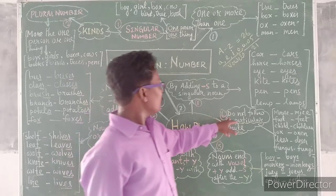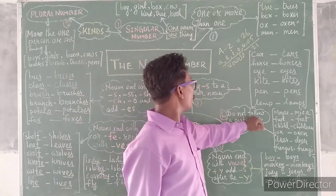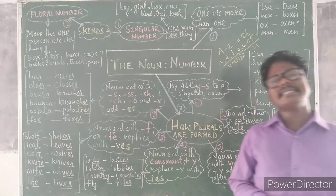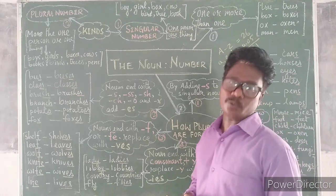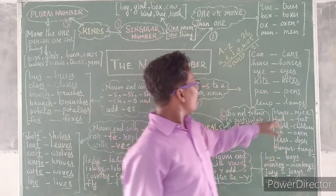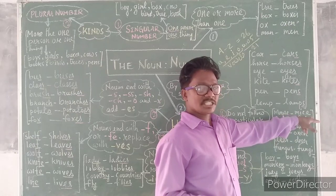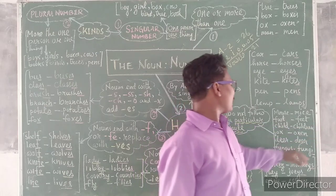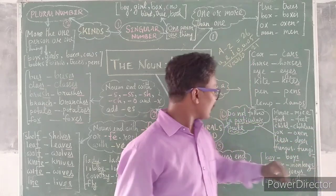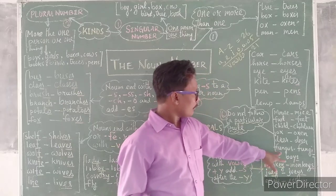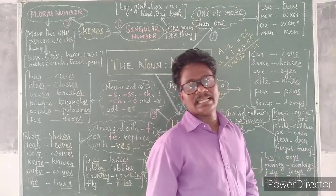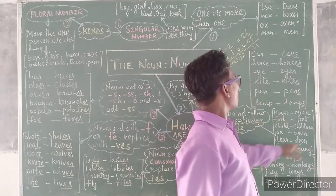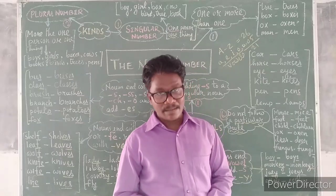Sixth: some nouns do not follow any particular rule. Examples: mouse — mice, foot — feet, child — children, ox — oxen, deer — deer, fungus — fungi. This is the sixth way we form a plural number — irregular plurals.